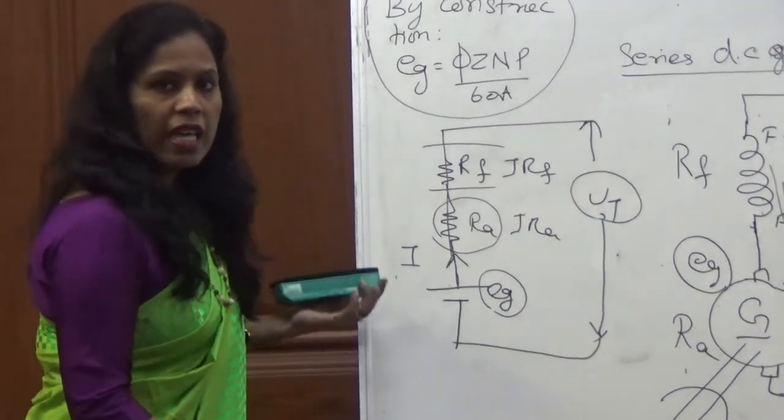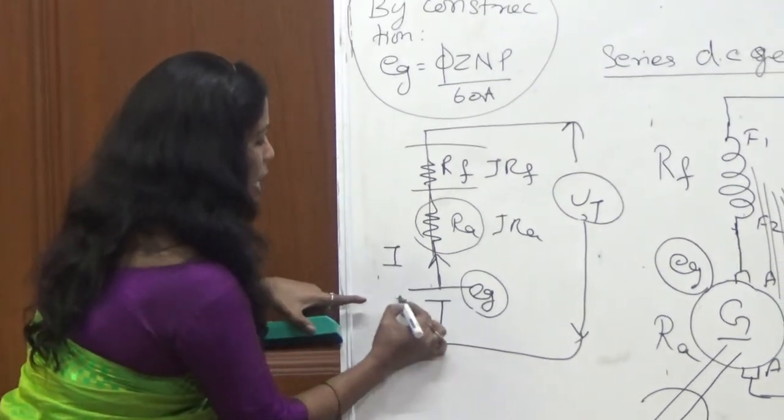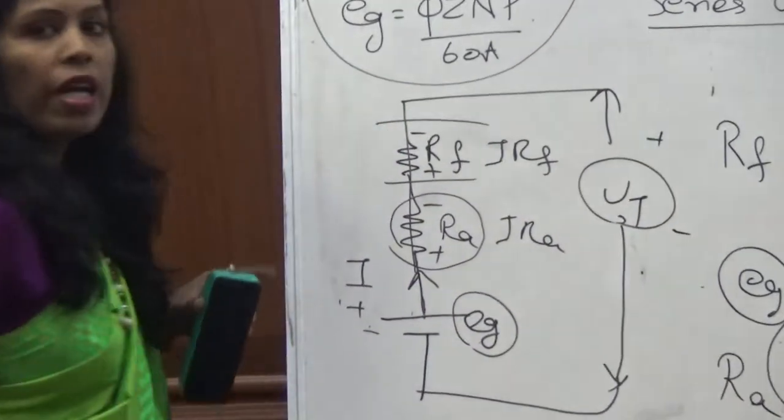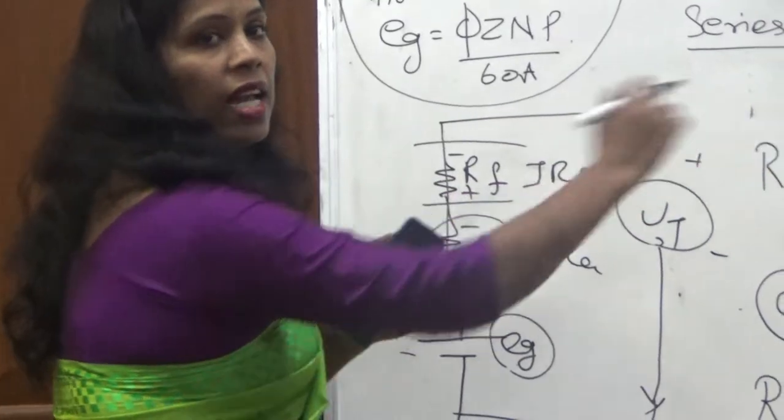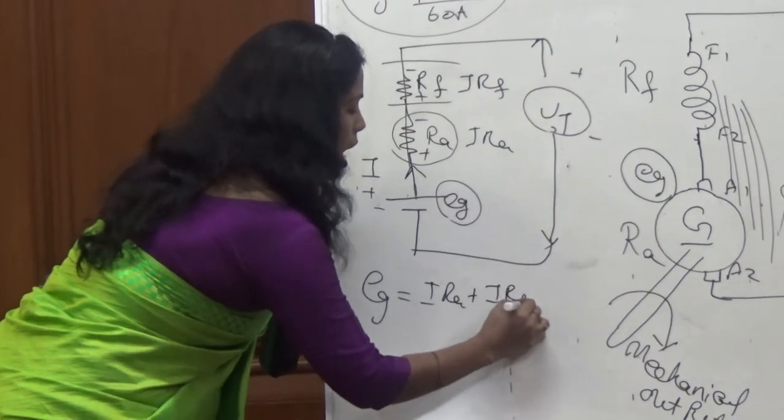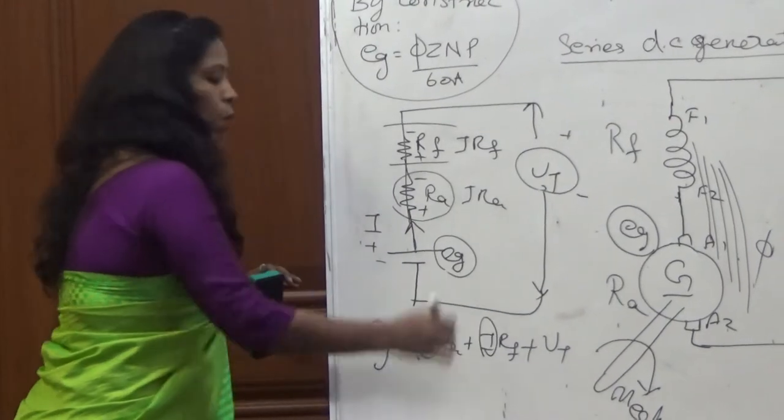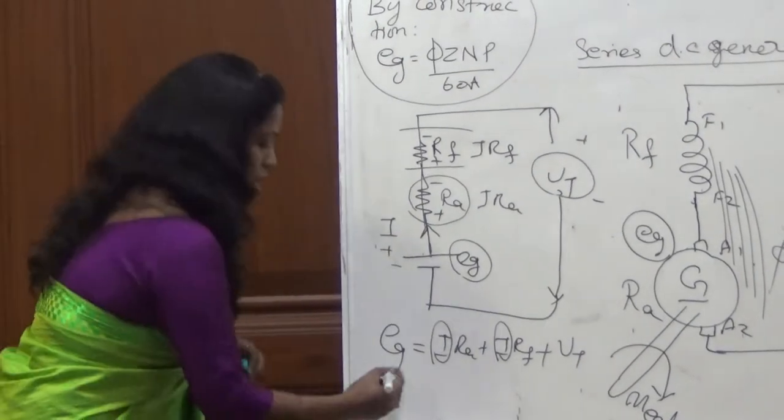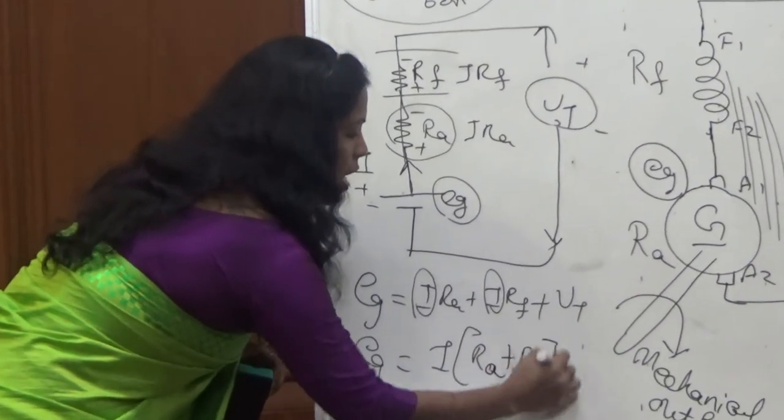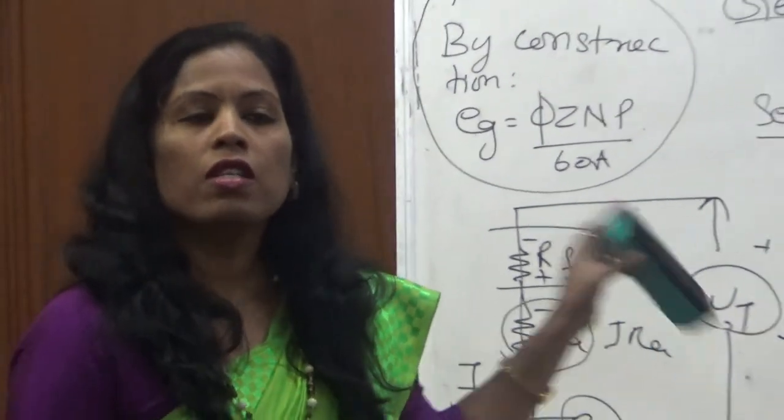By using KVL. What is KVL? Algebraic sum of input voltage equal to drop voltage. See this: this is minus-plus, this is plus-minus, this is plus-minus, and this is also plus-minus. So this will be one side, remaining on the other side. This is EMF which is generated, is equal to I into RA plus I into RF plus output voltage VT. Since this current and this one both are same, since it is in series connection, EG will be equal to I is common, RA plus RF plus VT. This is the final equation of series DC generator.